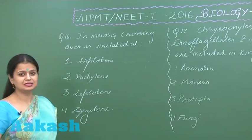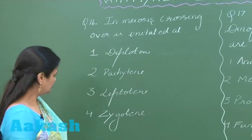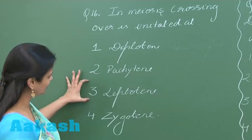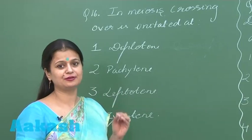So let's start with question number 16. In meiosis, crossing over is initiated at - so let's start with a sequence of stages in meiosis. The first one is leptotene. In leptotene, condensation of genetic material occurs.